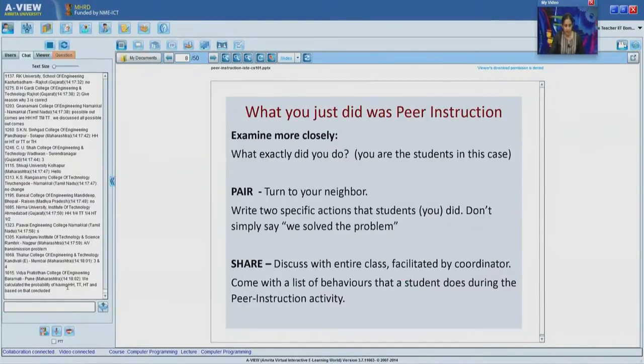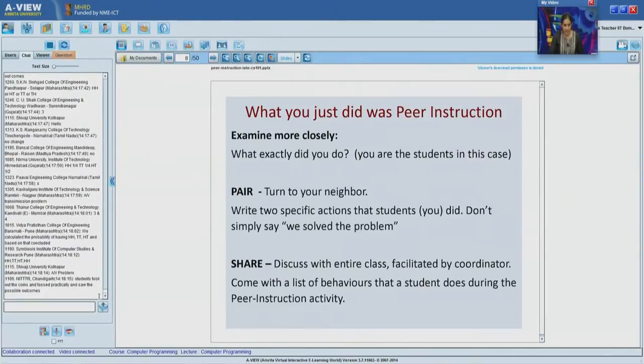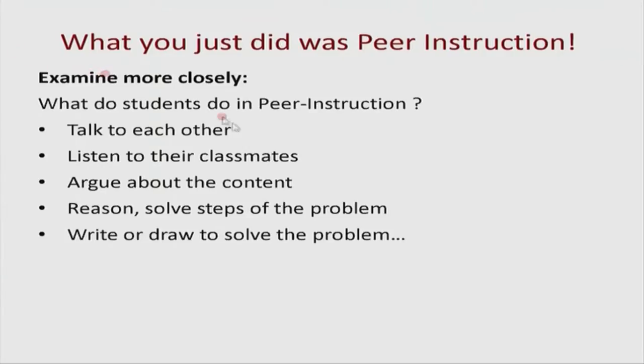I am getting many answers saying we calculated the probability and discussed why four is the wrong answer. Initially only answers of four were coming in. What is happening is that the moment you start talking to fellow participants, you are talking, listening, arguing about the right answer, reasoning, solving the problem, maybe doing some calculations. This entire process — teacher poses a multiple choice question, students answer it, students discuss, sometimes vote again, determine the reasons — that entire process is called peer instruction.